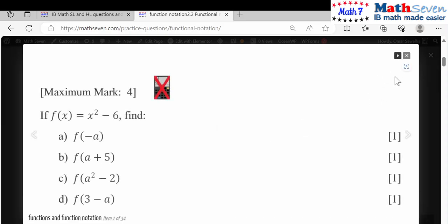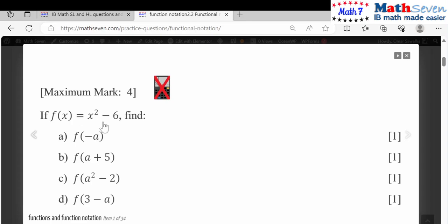If f of x equals x squared minus 6, find f of minus a. With this question it's simply telling you when you have x you put the x here. Look, f of x equals x squared at something, so if you have f of z it's going to be z squared minus six. If you have f of r then it is r squared minus six.